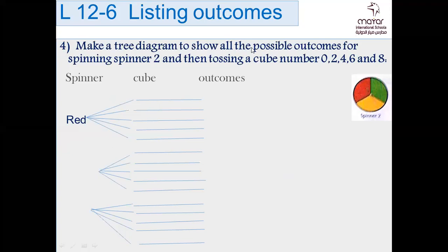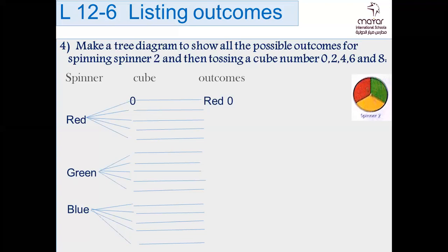Make a tree diagram to show all the possible outcomes for spinning spinner two and then tossing a cube with numbers 0, 2, 4, 6, and 8. The cube is not a standard dice — it has 0, 2, 4, 6, 8. Starting with red: red 0, red 2, red 4, red 6, red 8.